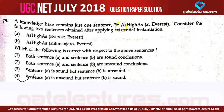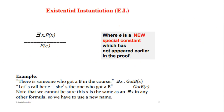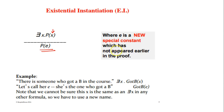The next question has a knowledge base with the sentence: 'There exists x such that AsHighAs(x, Average).' We need to consider sentences obtained after applying existential instantiation. Existential instantiation means we take some real constant value in place of the variable. For example, given there exists x such that P(x) is true, we can write P(e), where e is a new constant not appearing earlier in the proof.